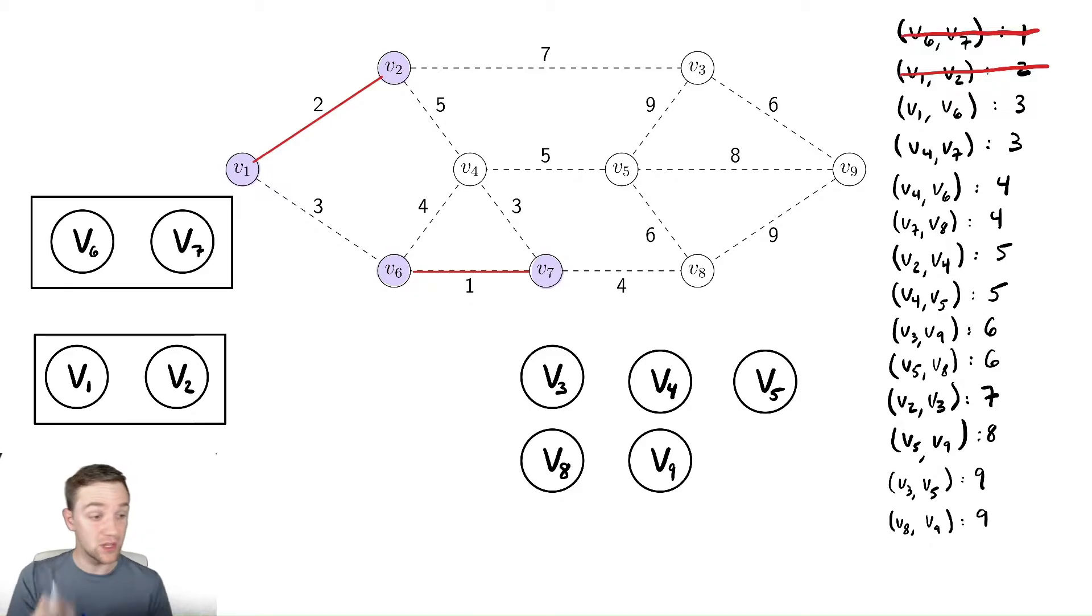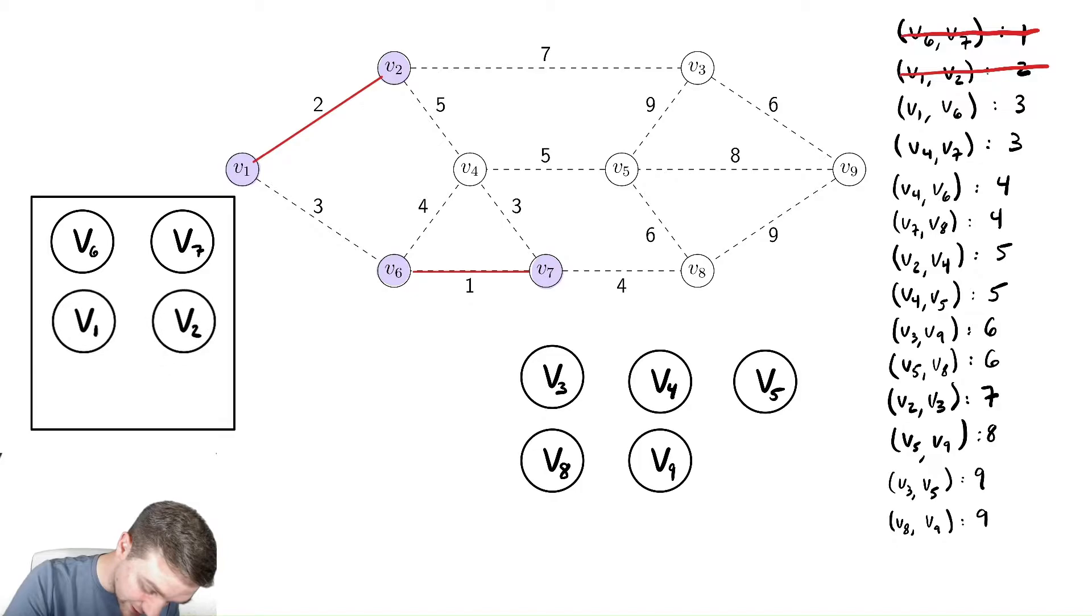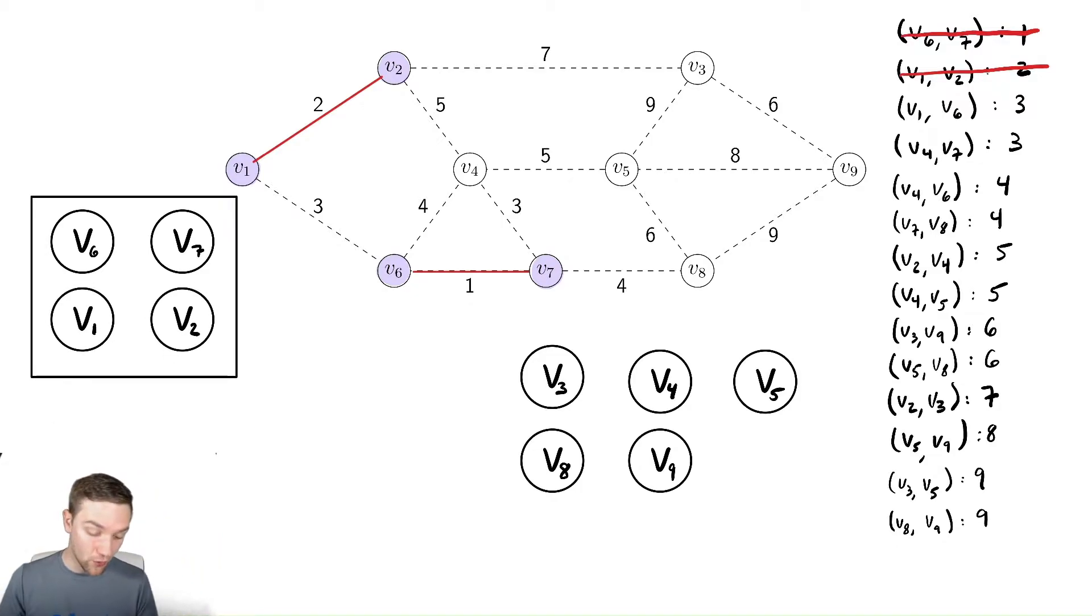No, they are not. Therefore, they will not create a cycle when we add them together. So we are going to add v1 and v2 to the set containing v7 and v6. So to do that, let us expand this and maybe move these up a little bit to make it look nicer. So we have a new set that has all four of those vertices. We then add the edge between them. And now this is our minimum spanning tree so far.